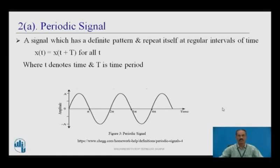A periodic signal satisfies x(t) = x(t + T) for all t, where small t denotes time and capital T denotes the time period or fundamental period. As you can see in the example, the first cycle has time period T and the second cycle also has time period T — it repeats with a definite shape and pattern. This condition also holds for x(t + 2T), x(t + 3T), and so on.